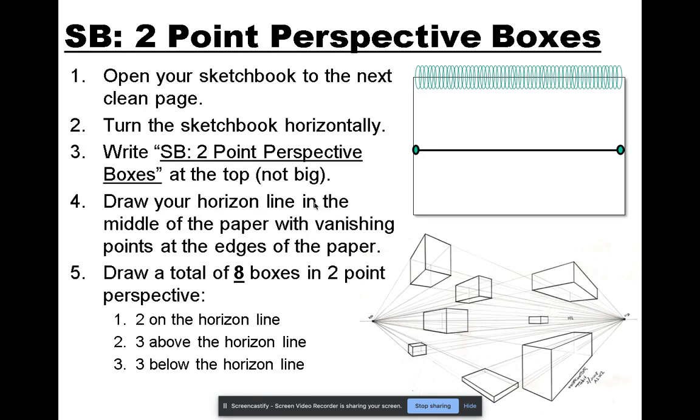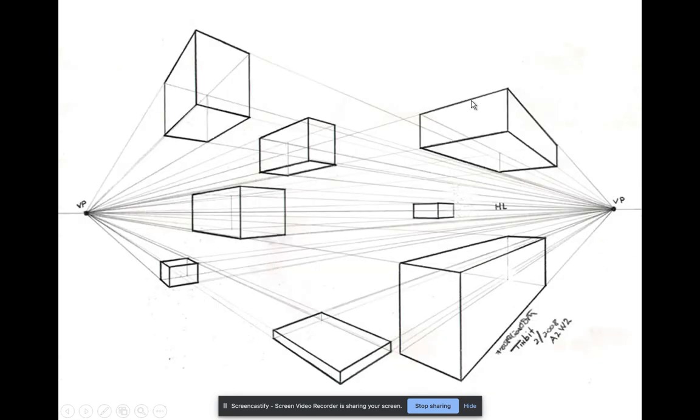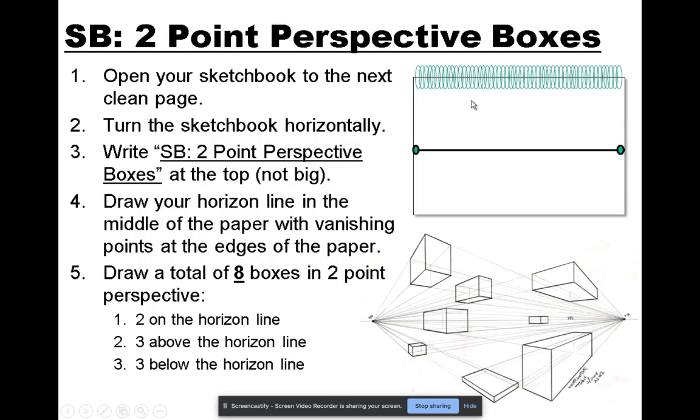For your first assignment, label the top of your sketchbook page SB two-point perspective boxes. The three that you just drew can count as part of these. Put your horizon line in the middle with your vanishing points on either side, and draw eight total boxes: two on the horizon line, three above the horizon line, and three below the horizon line.